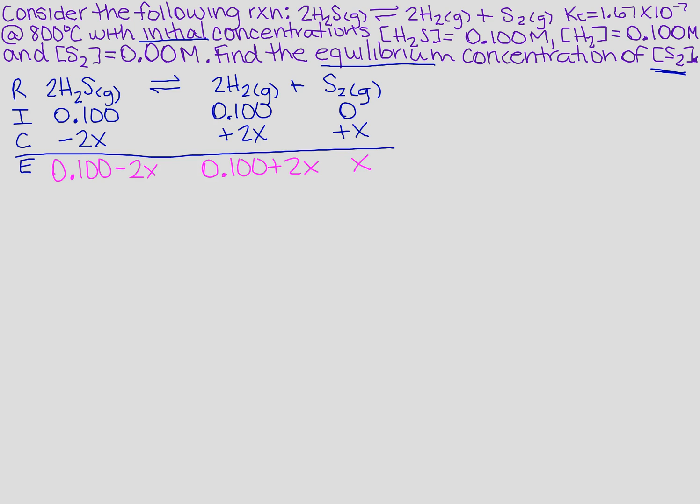So when we set up the RICE table, we write down the reaction. So I recopied the reaction. I need to write down my initial concentrations, which they provided for me, and then the change. And remember, I'm losing reactant, so it's minus. I'm gaining product, so it's a plus. And then I added straight down, and I went ahead and put it in a different color so that we can make sure that it pops and remember what we're looking for.